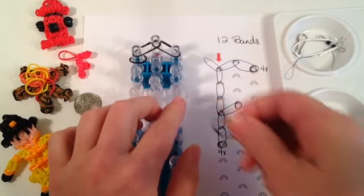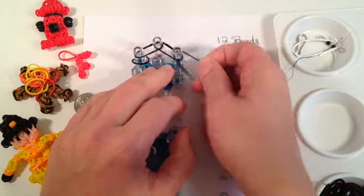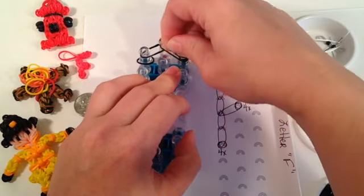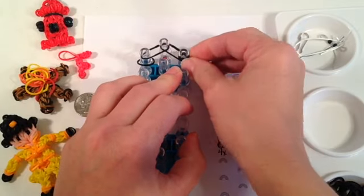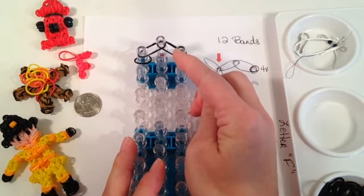Then on this right peg we're going to do a four-time cap band. One, two, three, four, and you're wrapping that band around that peg four times.